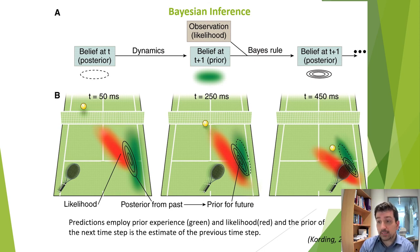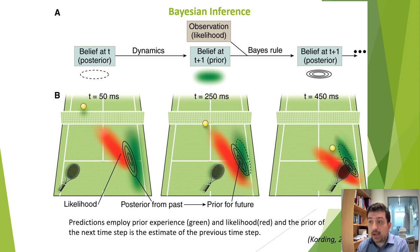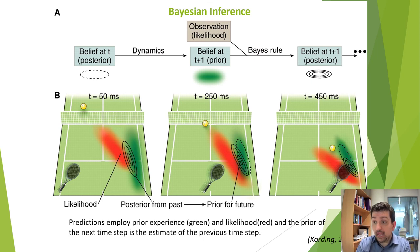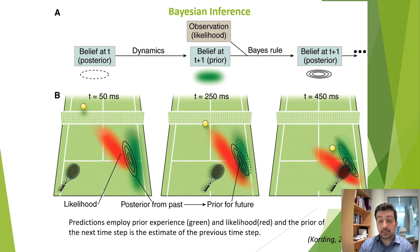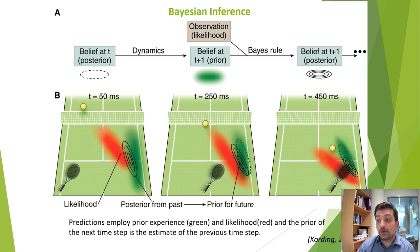The posterior from the past, as you can read at the bottom of the slide, becomes the prior for the future. It becomes the new green ellipsoid that is combined with the new red ellipsoid — the new sensory data or likelihood — and gives a new posterior, and so on. In general, when we try to respond to the opponent hitting the ball, we employ prior experience with sensory evidence — the green and red ellipsoids — and we do that in an iterative fashion over time, over and over again.